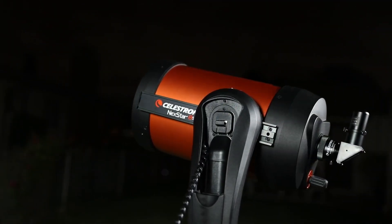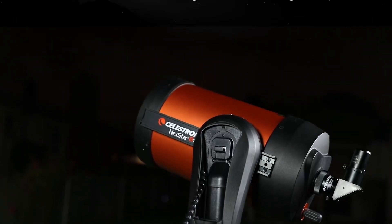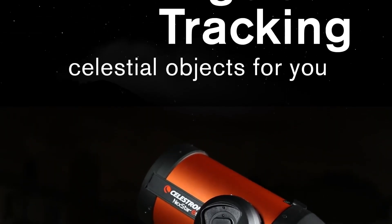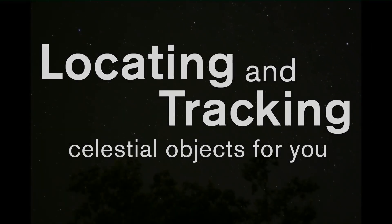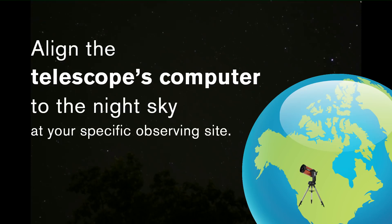Computerized telescopes take the guesswork out of navigating the night sky by automatically locating and tracking celestial objects for you. But in order to use this technology, you'll first need to align the telescope's computer to the night sky at your specific observing site.